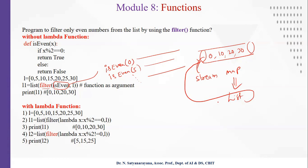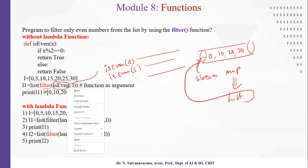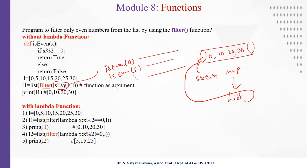Instead of jumping back and forth between the function definition and the place where it is passed as an argument, you can write a lambda function that is simply replaced with an expression. For example, using a lambda function that checks divisibility by 2 — this reduces a lot of code and makes it very concise. The code becomes much more readable.